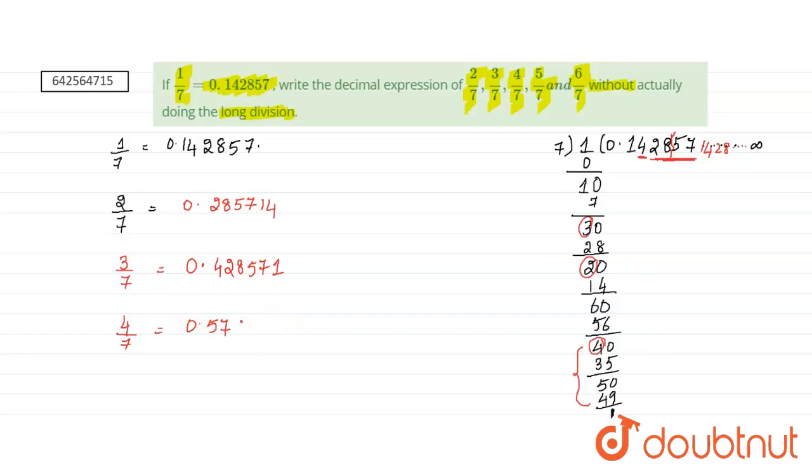So, we get 0 point, 5, 7, 1, 4, 2, 8, after 5, 7, we have to write the beginning digits after 5, 7, these all digits come after 5, 7.